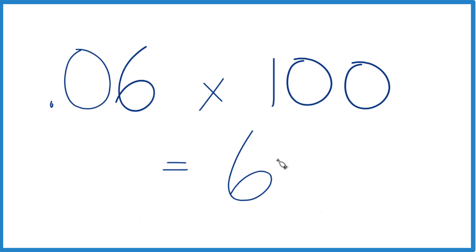So 6% of 100 is 6. We got this to a decimal and then just multiply it by 100.